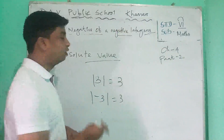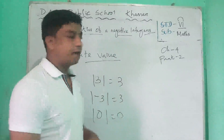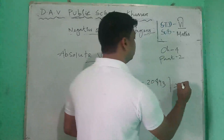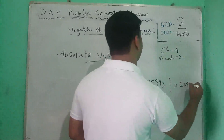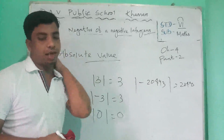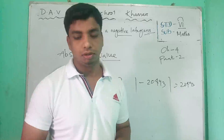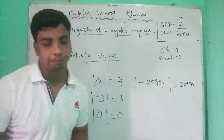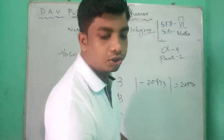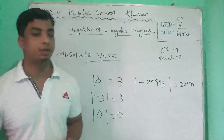So if we find the absolute value, it will always be a positive integer. Absolute value of 0 is 0. Absolute value of minus 20,493 is 20,493. These are the absolute values and the key facts about integers, positive integers, and negative integers.